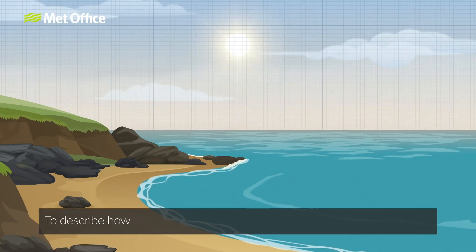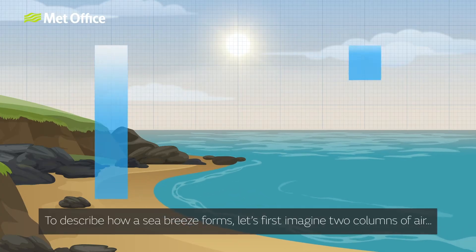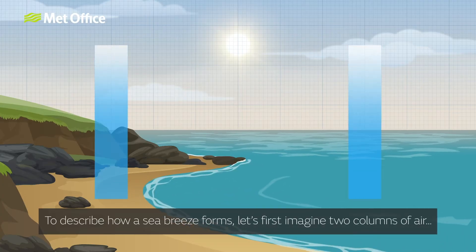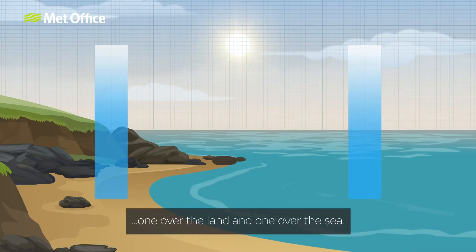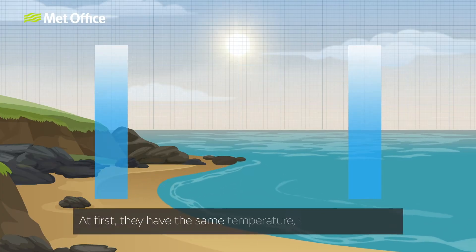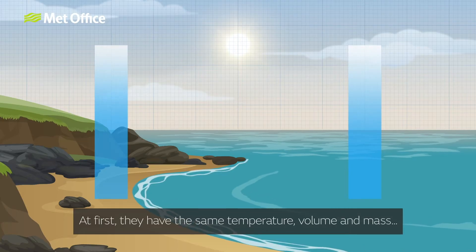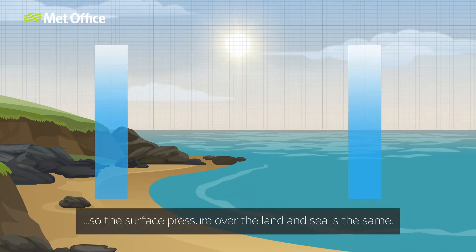To describe how a sea breeze forms, let's first imagine two columns of air — one over the land and one over the sea. At first they have the same temperature, volume, and mass, so the surface pressure over the land and sea is the same.